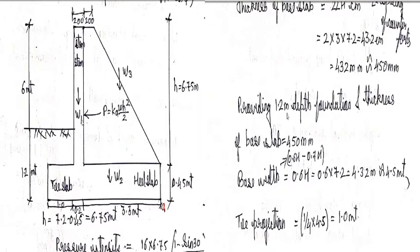Now let us provide a 1.2 meter depth of foundation and the thickness of the base slab is 450 mm. Base width will be in the range of 0.6H to 0.7H.